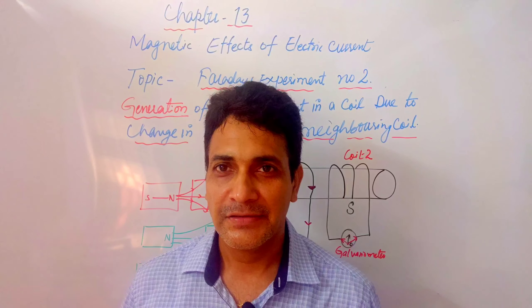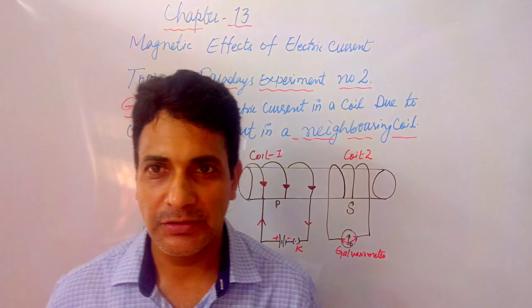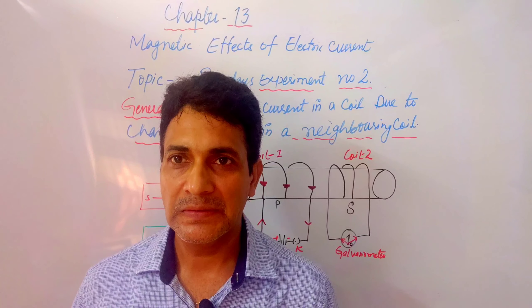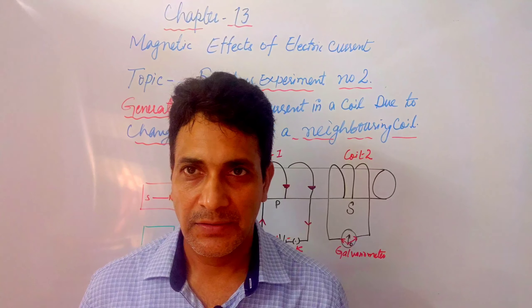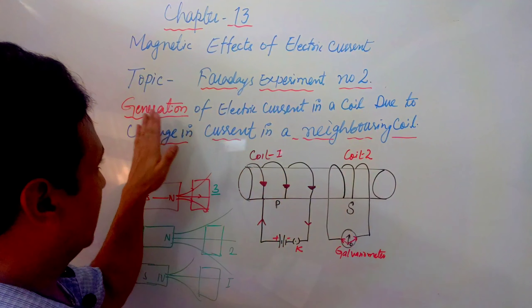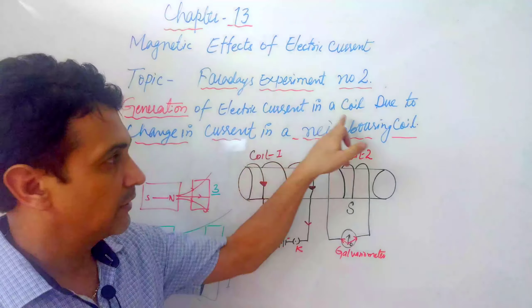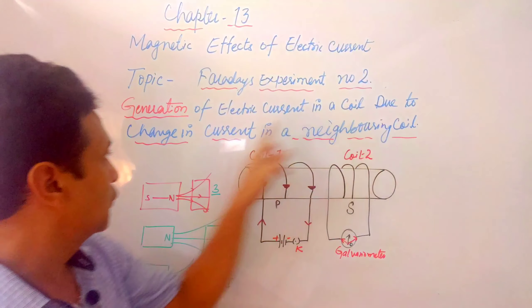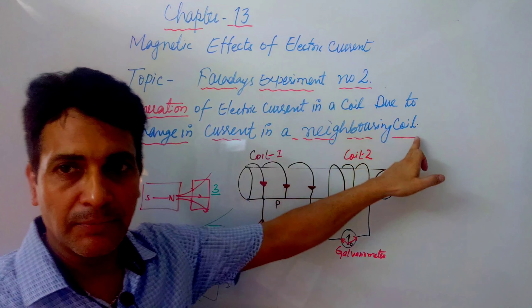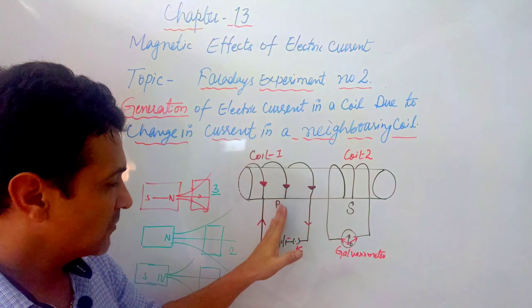Hello, good morning students. Today we are going to study Faraday's experiment number two. Here we will discuss the generation of electric current in a coil due to change in current in a neighboring coil — meaning the first coil's current will be changed, and the induced current that develops in the neighboring coil.